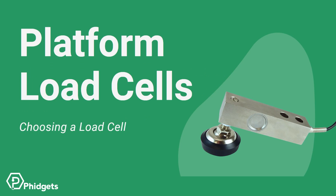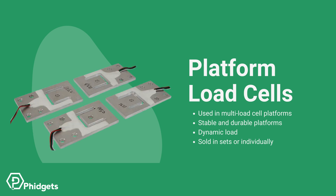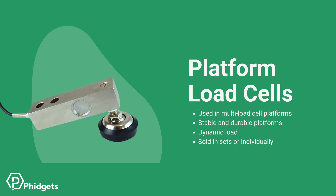Platform load cells are designed to be used in parallel for multi-point weighing platforms. Because the platform is supported in more than one place, systems made with these load cells are very stable and durable. Load distribution does not matter, and dynamic forces can be easily withstood. Some platform load cells are sold in sets, indicating they should only be used together, while others are sold individually, meaning they can be used in parallel with any number of the same load cells.